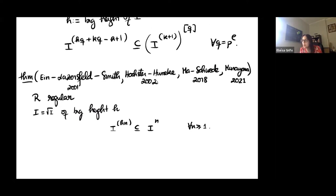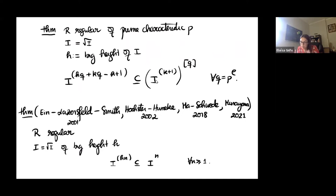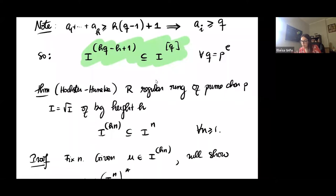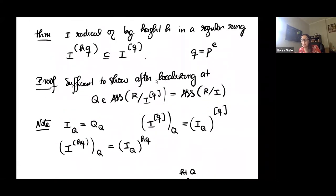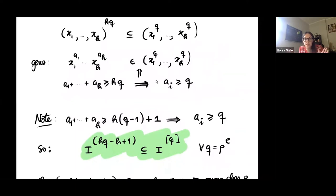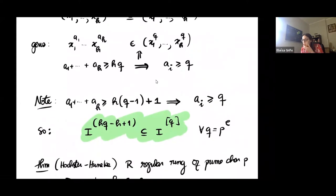The main points to prove this theorem in characteristic p, as Hochster-Huneke did, were to cleverly use tight closure techniques and to use the pigeonhole principle. We used tight closure because it's easier to prove that something is in the tight closure of the power than to prove it is in the power itself. And then our ring was regular, so ideals were tightly closed. The pigeonhole principle gave us the containment when we take a power.